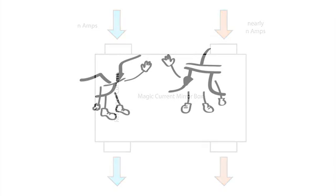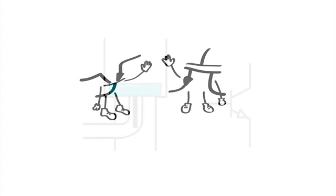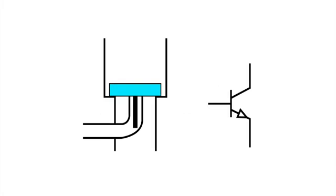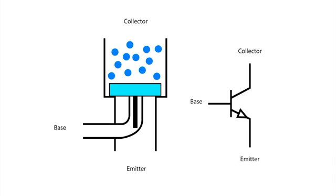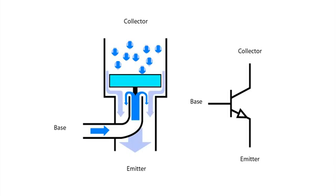But before we get into the details of how a current mirror source actually works, we need to know how a transistor works. As we've seen before with the famous water analogy, the bipolar junction transistor can be modeled with the following diagram. Imagine that the flow of water is the electrical current.